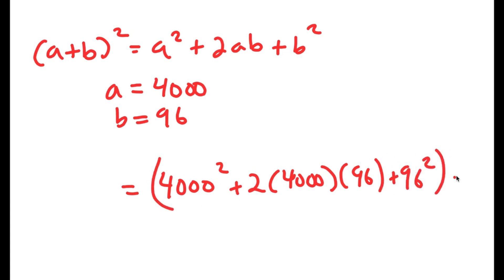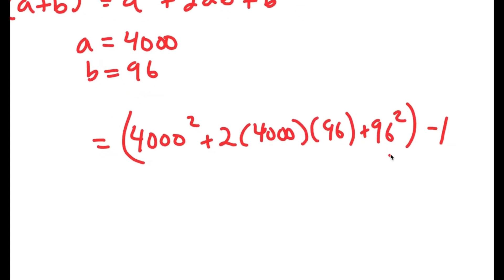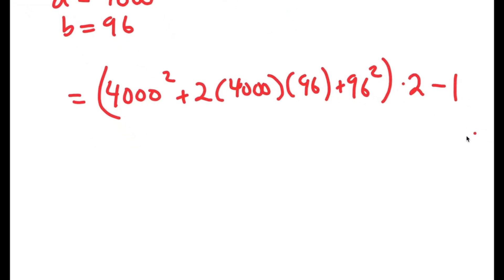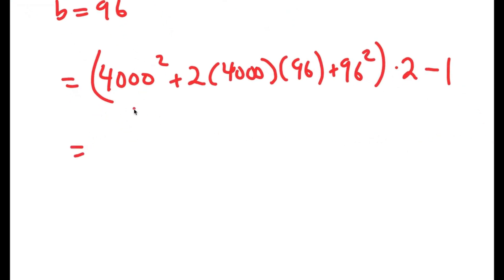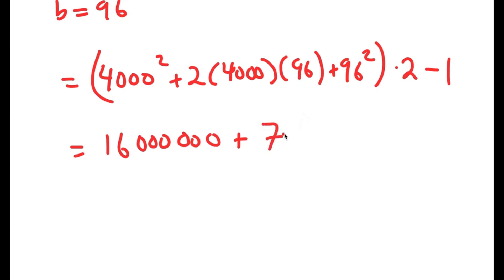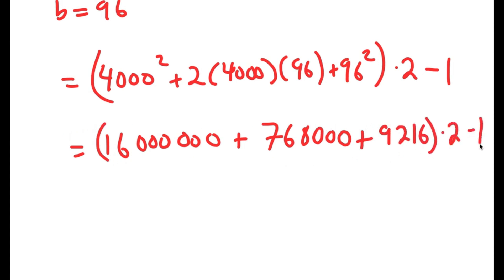And I have all of this — oh sorry — all of this times 2 minus 1. Now, 4000 squared is equal to 16,000,000. 2 times 4000 is 8,000, and 8,000 times 96 is equal to 768,000. And I have this plus 96 squared, which is equal to 9,216. And all of this I have times 2 minus 1.